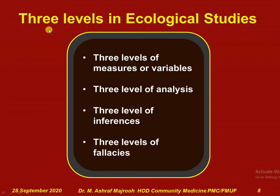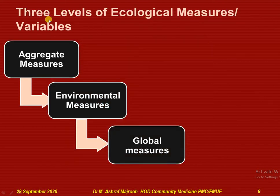There are three levels in ecological measures: three levels of variables, three levels of analysis, three levels of inferences, and three levels of fallacies. The three levels of ecological variables are aggregate variables, environmental measures or variables, and global measures or variables.